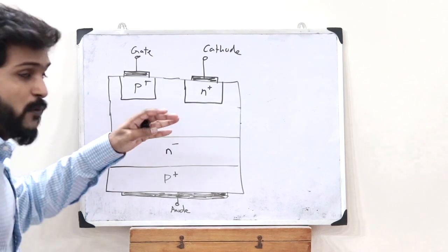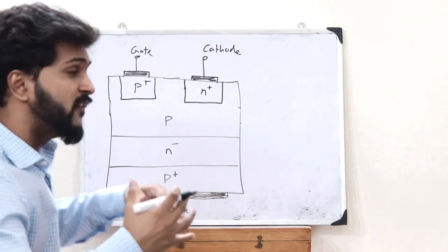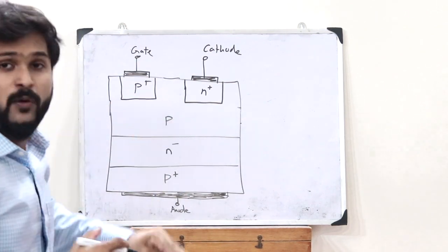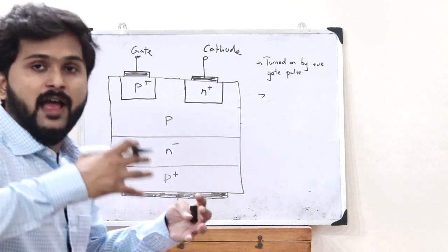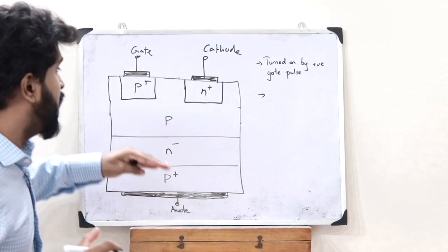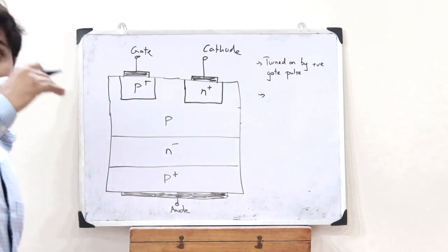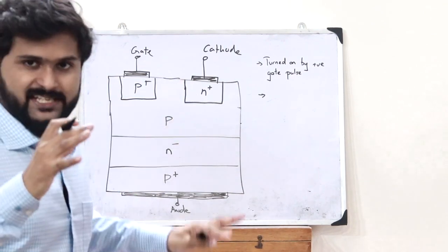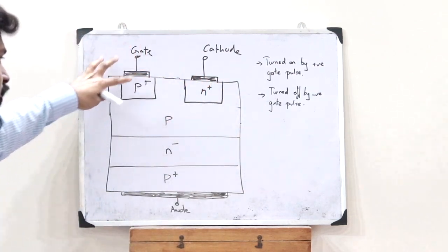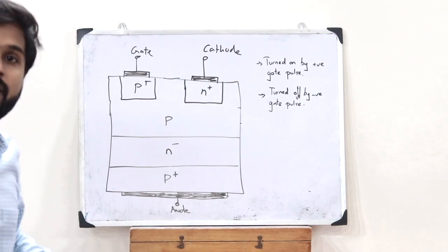This particular GTO is turned on by providing it with a positive gate pulse. When you provide a positive pulse at the gate, the GTO is turned on, and subsequently it is turned off by providing a negative gate pulse at the gate terminal. That is how we turn on and turn off this particular GTO or Gate Turn Off Thyristor.